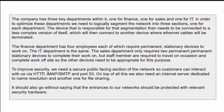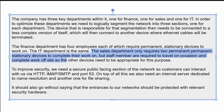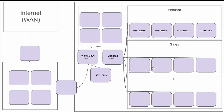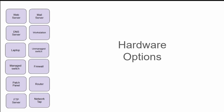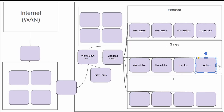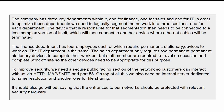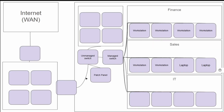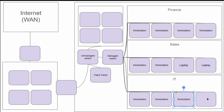The sales department only requires two permanent stationary devices, but staff members are required to travel on occasion and complete work off-site, so the other devices need to be appropriate for that purpose. The permanent ones are workstations. The travel devices? Just laptops — you take the laptop from one place to another. And the IT department is the same as finance, so that's going to be workstations there too.